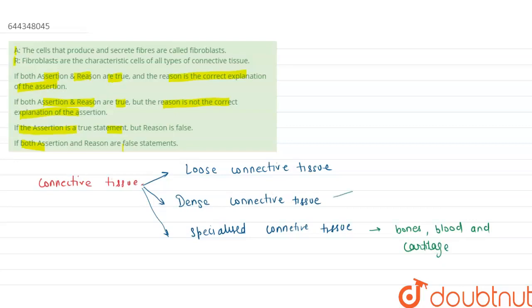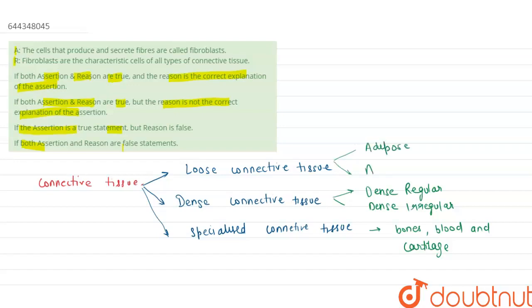Dense connective tissue is of two types. First one is dense regular, in which cells and fibers are present in a regular fashion. And the other one is dense irregular, in which cells and fibers are present in an irregular manner. Loose connective tissue is also of two types: first one is adipose and second one is areolar.